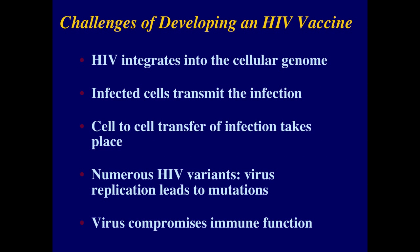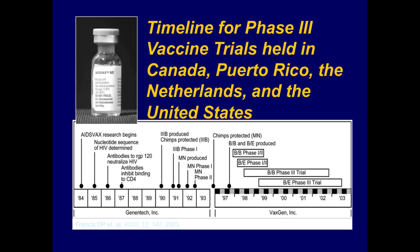What are the vaccine challenges? It is difficult to kill a virus-infected cell when HIV is integrating into the cell genome. Infected cells transmit the infection and can transfer the virus cell-to-cell. There may be many different variants, and the virus itself can compromise the immune function you want to induce with a vaccine. A vaccine can take many years — early work on the first vaccine began in 1984, and it took 20 years before there was a clinical trial. Unfortunately, up until this time we do not have any vaccine that is effective enough to begin vaccinating large populations.